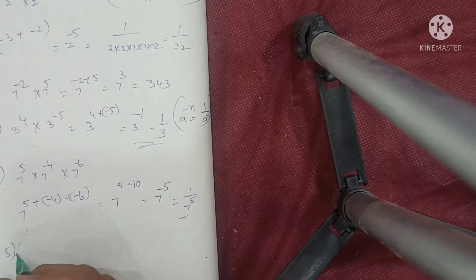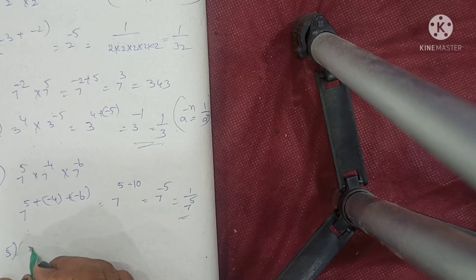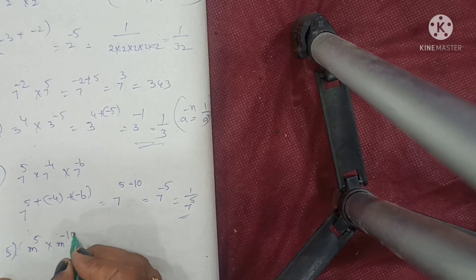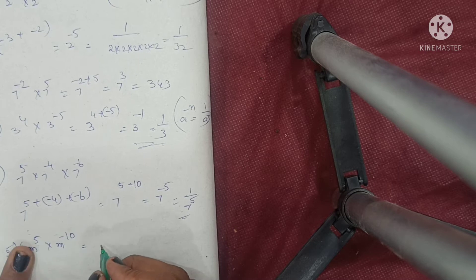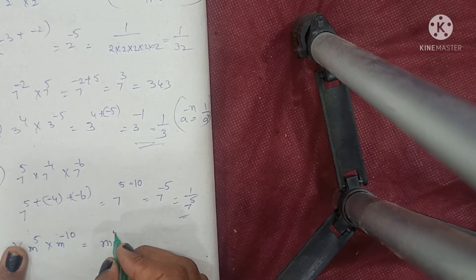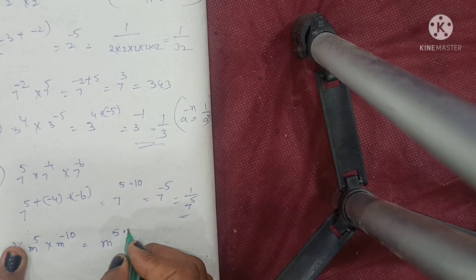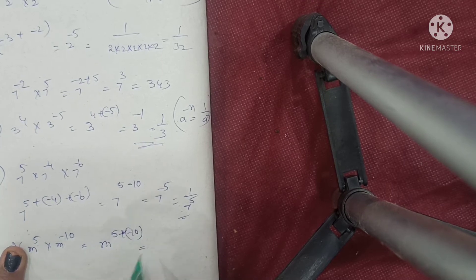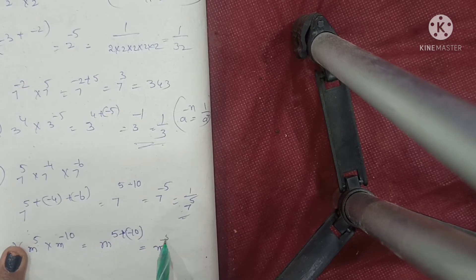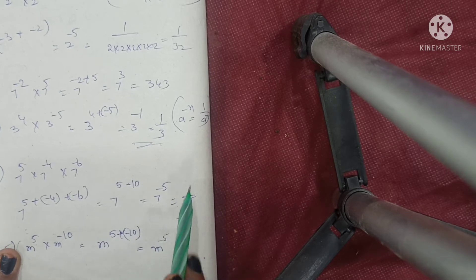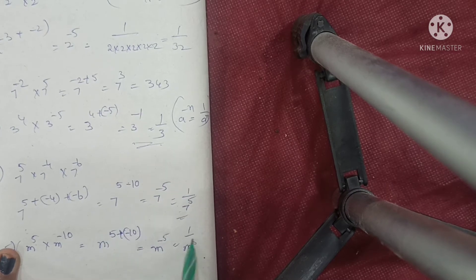Next, fifth one: M power of 5 into M power of minus 10. This means M power of 5 plus minus 10, which means M power of minus 5. Converting using the formula, it means 1 by M power of 5.